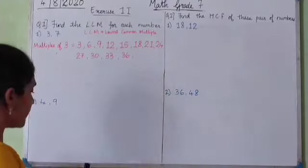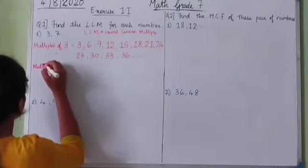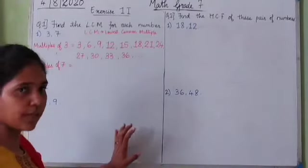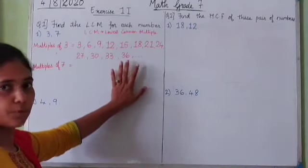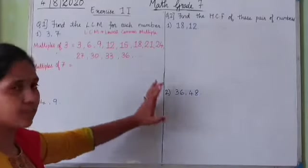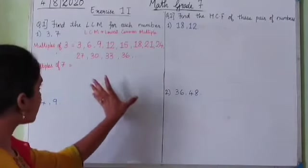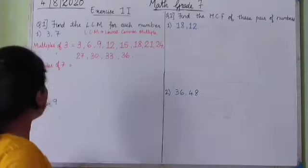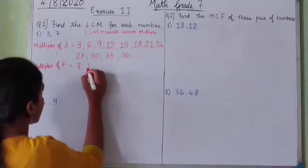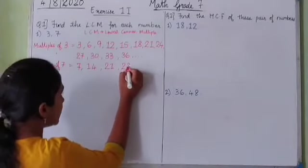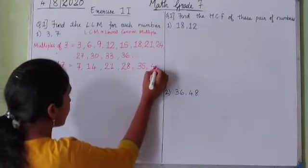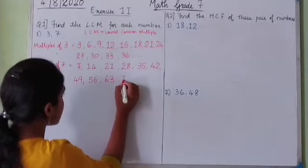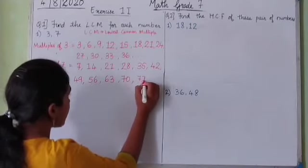Now the multiples of 7 — we write the table of the second number up to a sufficient extent. Multiples of 7: 7, 14, 21, 28, 35, 42, 49, 56, 63, 70, 77 — and so on, these numbers keep increasing.